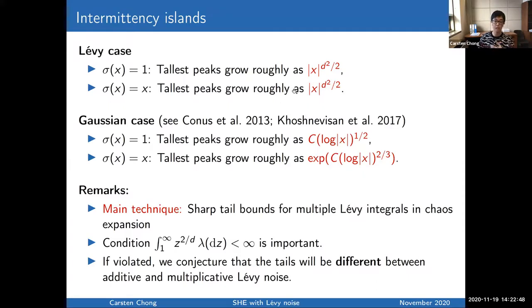The way you prove such a result in the Lévy case is that you have to obtain sharp tail bounds for multiple Lévy integrals when you do the chaos expansion for the solution. Let me mention that this condition that I've imposed in this theorem is important. So it's important that the solution have a finite 2 over D moment. Otherwise, we conjecture that the tails will be different between additive and multiplicative Lévy noise. So that's something that we still haven't proven yet, but that's our conjecture at the moment.